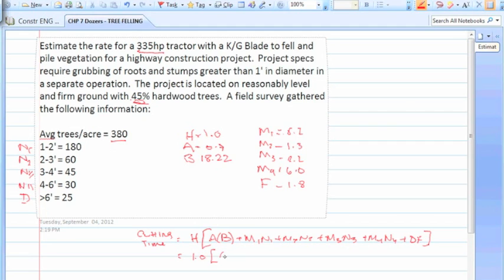1.0 times 0.7 times 18.22, plus 0.2 times 180, plus 1.3 times 60, plus 2.2 times 45. Put it down here: 6.0 times 30, plus 1.8 times 25.